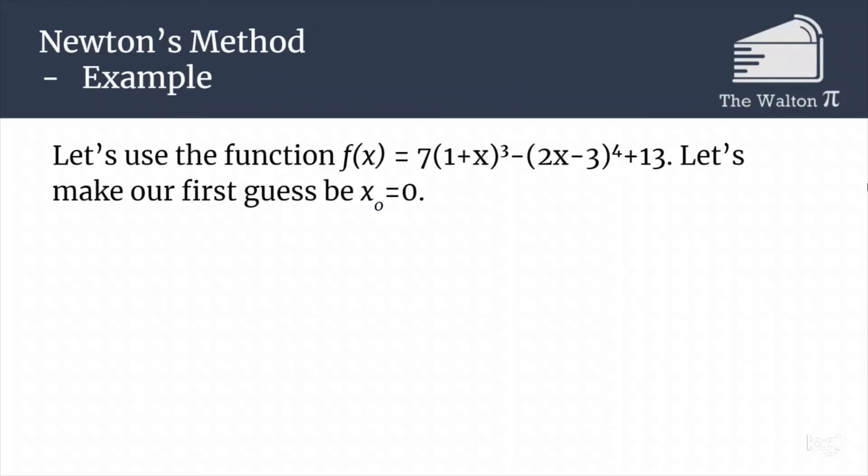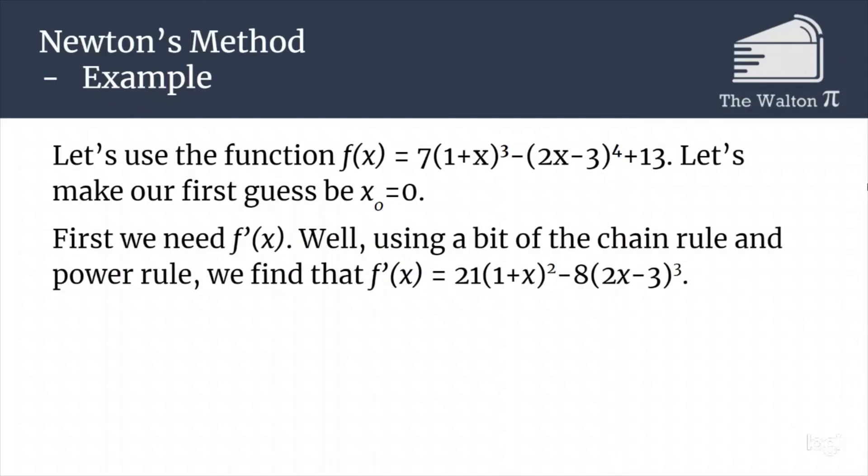So let's go back to our example. f(x) = 7(1+x)^3 - (2x-3)^4 + 13. Let's make our first guess be x₀ = 0. First we need to figure out what's the derivative of the function. So using the chain rule and the power rule, we can find that the derivative of our function, f'(x), is 21(1+x)^2 - 8(2x-3)^3.